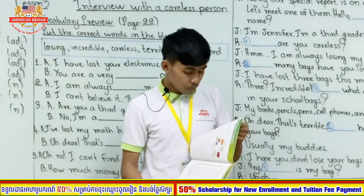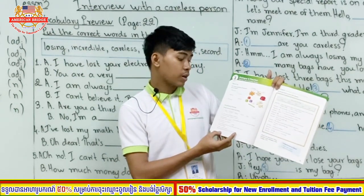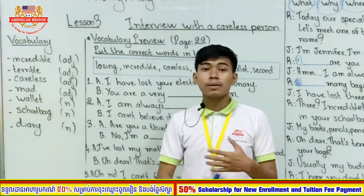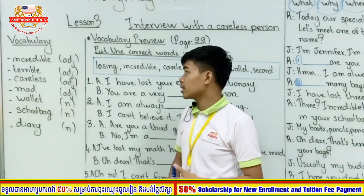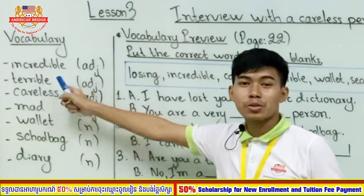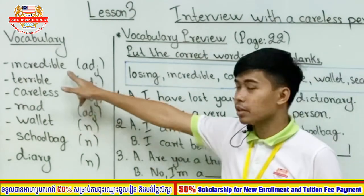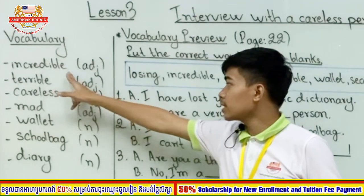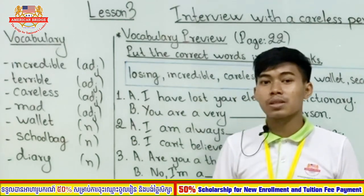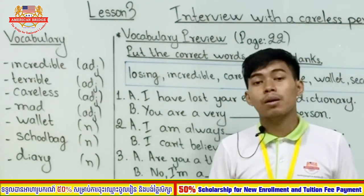Now it's time to go to Lesson 3. Open your book to page 22 — you will see the vocabulary preview. There are some words we are going to learn today. The first word is 'incredible.' I'm sure you learned this word already in a short story last week. 'Incredible' is an adjective. We used it to describe a person who is extremely good.